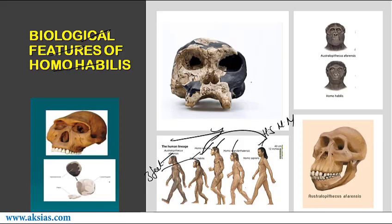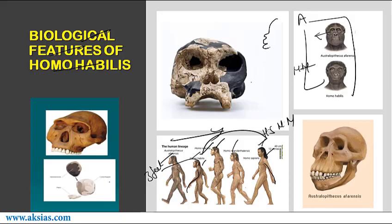Richard Leakey proposed naming them Australopithecus habilis. Not only was Homo habilis short, but its arms were disproportionate to its body, whereas in modern man the arms are well proportionately arranged. Homo habilis also had a less protruding face. Australopithecus has more protrusion whereas Homo habilis has less protrusion.